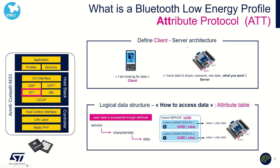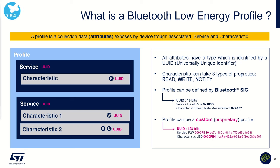This is how we define the client-server architecture for connection. Now we need to access data. How to access data? This is the purpose of ATT — the Attribute Protocol. ATT defines a way to access data. It defines the notion of service, characteristics, and data. Everything is included inside what we call a profile. A Bluetooth Low Energy profile includes one or more services. Each service can handle one or more characteristics. Each characteristic has different properties — three main ones: read, write, and notify.